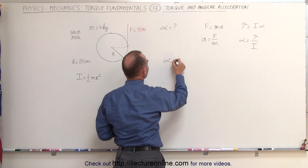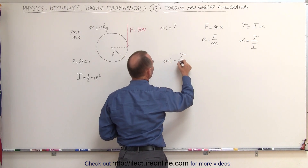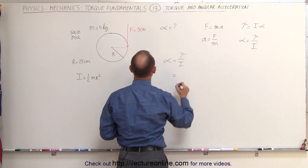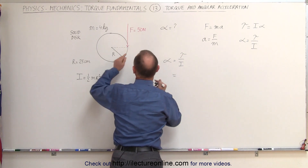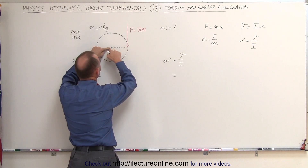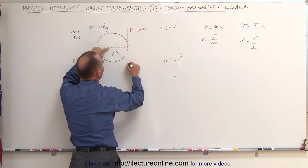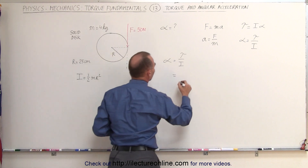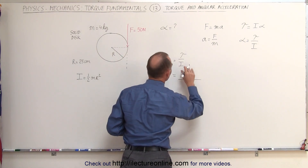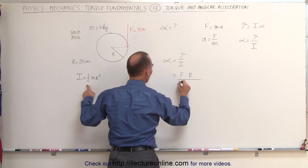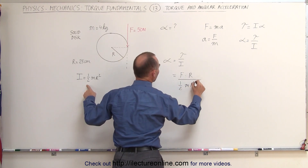That means that alpha, the angular acceleration, is equal to the torque divided by the moment of inertia. The torque will be equal to the force times the perpendicular distance from the point of rotation to the line of action of the force. That would be the radius of the disc here, so it would be force times the radius of the disc divided by the moment of inertia, which is one-half times the mass times the radius squared.